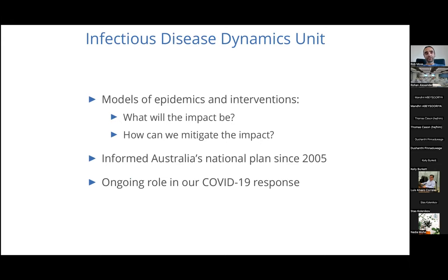I've got a really long affiliation because there are all these layers with long names, but the smallest unit is the Infectious Disease Dynamics unit. We're a weird mix of people across physics, computer science, epidemiology, and lots of other areas. Very broadly, most of our work uses mathematical and computational models to understand how infectious diseases spread in human and animal populations, what the impact of those epidemics will be, and how we might observe and intervene to mitigate that impact. Our group has been informing Australia's national pandemic plans over the last almost 20 years.